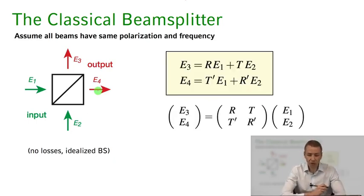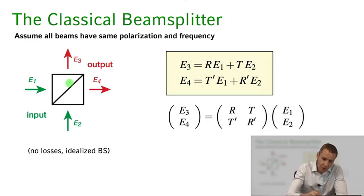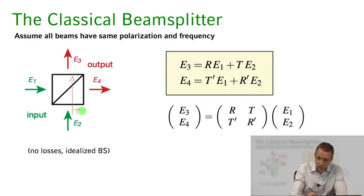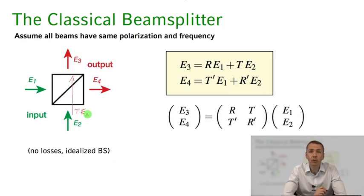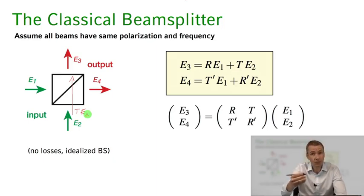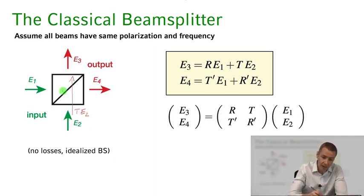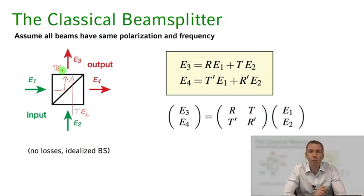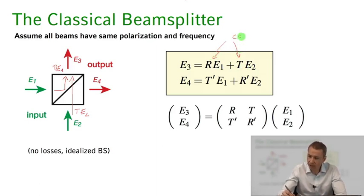In general, the output on port 3 can arise from transmission of the field e2, giving t times e2, where t is a complex transmission coefficient describing how the field magnitude changes and any phase shift acquired. There can also be a phase shift on the beam splitter. The other contribution is a reflection r times e1, where light from port 1 is reflected. So the output on port 3 is r·e1 plus t·e2, where r and t are complex coefficients.